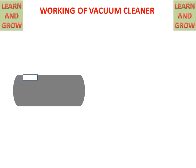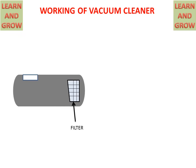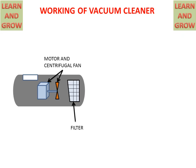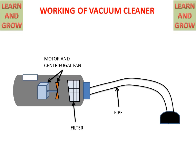We have a vacuum cleaner chamber. In the front of the vacuum cleaner chamber there are filters for filtering dust particles and giving clean air to the forward area. There are also a motor and centrifugal fan, and a pipe is attached to the cleaning apparatus.